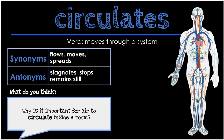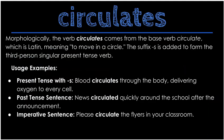What do you think? Why is it important for air to circulate inside a room? Morphologically, the verb circulates comes from the base verb circulate, which is Latin meaning to move in a circle. The suffix -s is added to form the third person singular present tense. With an -s, you could say: blood circulates through the body, delivering oxygen to every cell. As past tense: news circulated quickly around the school after the announcement. And as an imperative: please circulate the flyers in your room.